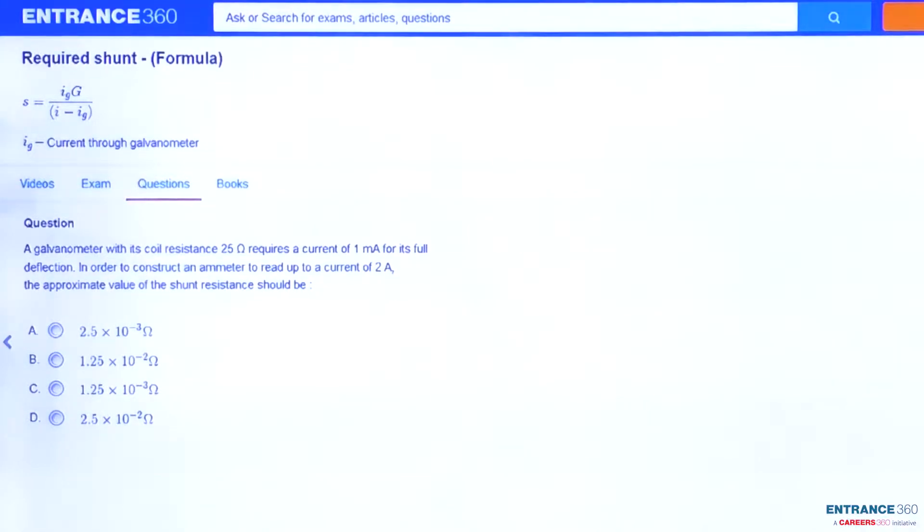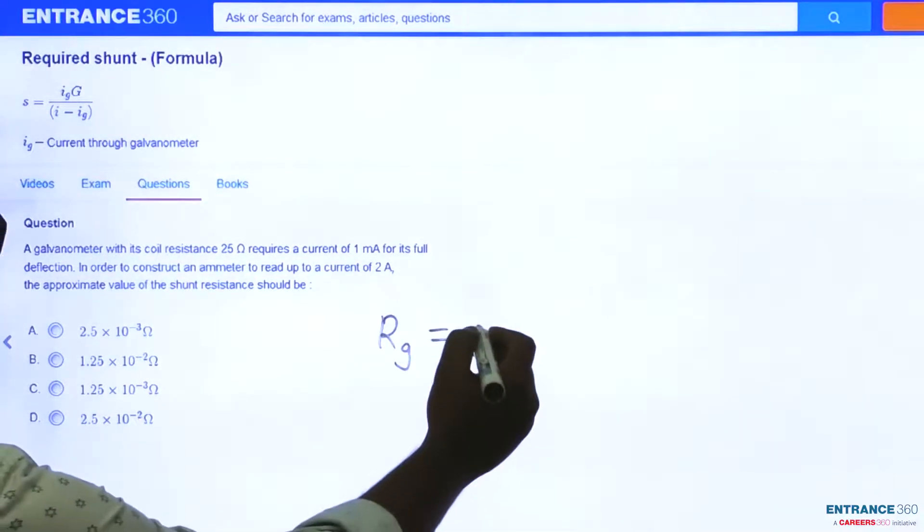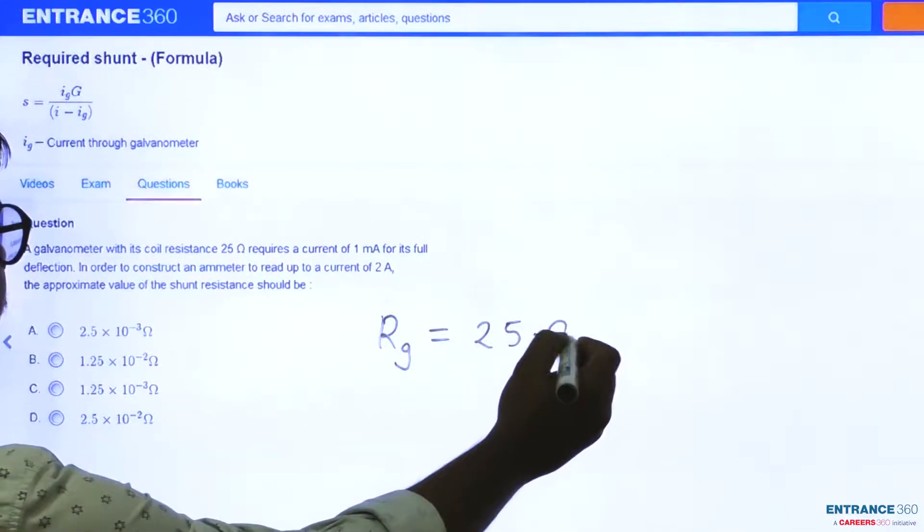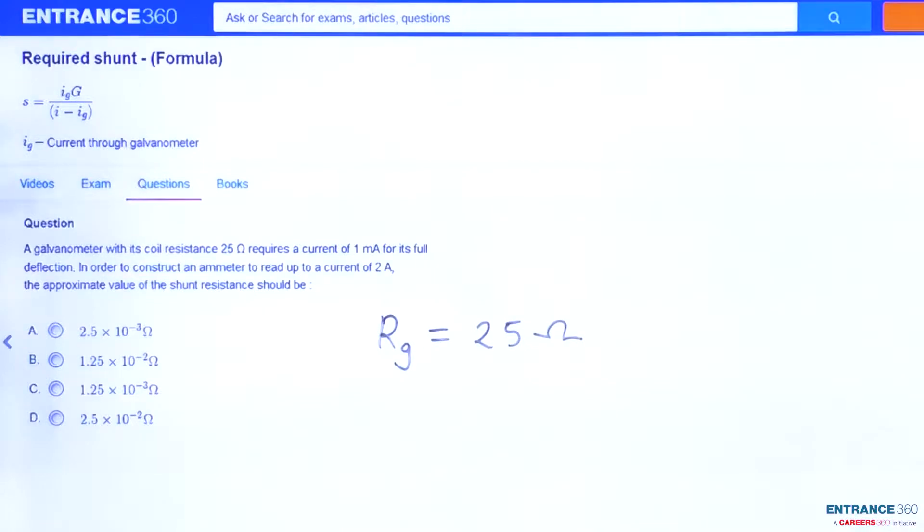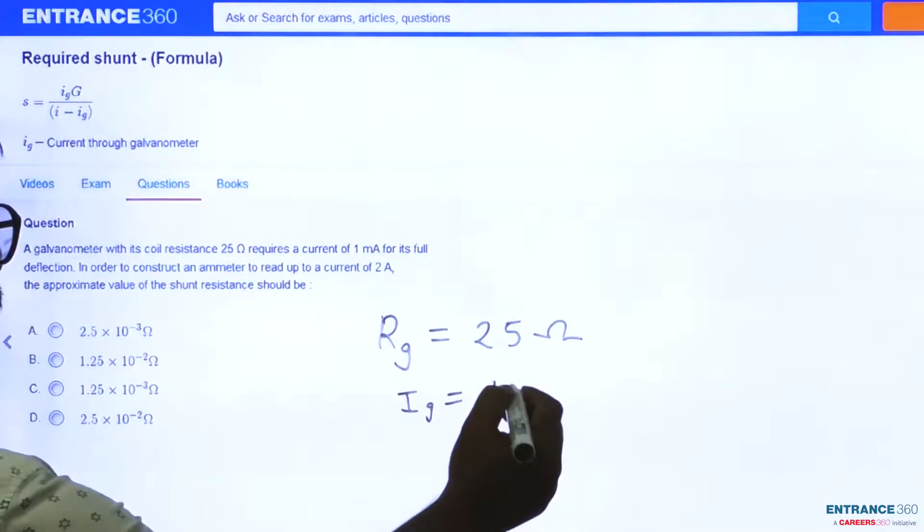If we clearly read the question, it shows that a galvanometer with its coil resistance as 25 Ohm, means value of Rg, that is resistance of galvanometer, is given as 25 Ohm. And it also shows that it requires a current of 1 mA for its full deflection, means value of Ig is given as 1 mA.